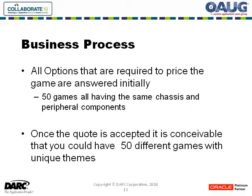Let's look at this business process. All options required to price the game are answered initially. So in order for the account executive to generate a quote, he's going to select 50 games, and all of the 50 games are going to have the same components discussed earlier. Based on this information, we can generate a quote for those 50 games. Once the quote is reviewed and the PO is issued, then typically what happens is it's determined what themes the games are going to be delivered with. It's conceivable that you could take all 50 of those games and have 50 unique themes with unique parts associated with them.